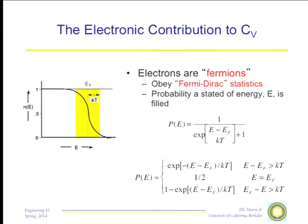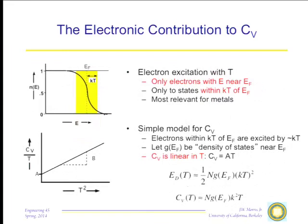The key point: the electronic contribution to the specific heat is rather small. The only way to get an increase in energy from electrons due to temperature is if electrons move from states below the Fermi level to states above it. In a semiconductor or insulator there are no states at the Fermi level — it is in the band gap. In a metal this can happen, but only electrons within kT of the Fermi level are affected, and in a typical metal only a very small fraction of electrons sit in that shell of width 2kT at the Fermi level.